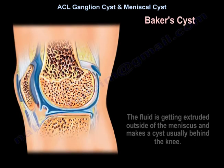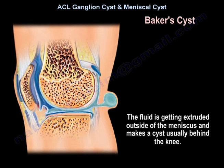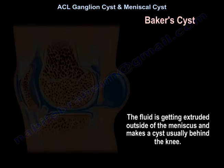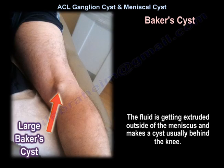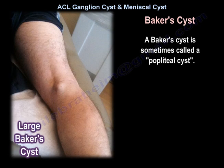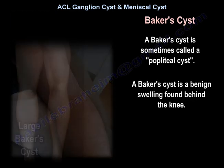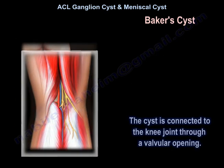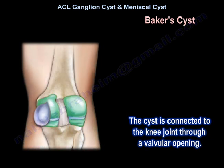In a Baker's cyst, fluid is excluded outside the meniscus, forming a cyst usually behind the knee. The Baker's cyst is sometimes called a popliteal cyst. It is a benign swelling found behind the knee, and the cyst is usually connected to the knee joint through a valvular opening.